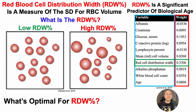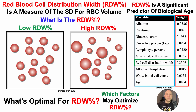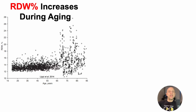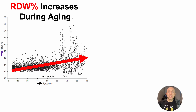What's optimal for the RDW percentage, and which factors may optimize it? The RDW percentage increases during aging, and we can see that here, with RDW percentage on the y-axis plotted against age from about 20 to 95 years on the x-axis, showing a clear age-related increase.